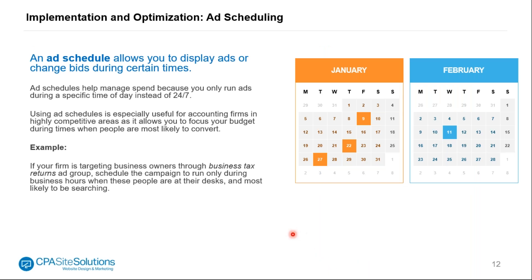Another way to manage your budget is to create an ad schedule, which allows you to display your ads or change bids at certain times. You're basically telling your campaign when the right type of people are searching for your services and displaying it only at that time. Some people run 24/7 especially when starting, but you'll want to watch the metrics and understand when people are clicking, so you can eliminate times with fewer searches and learn when profitable searchers are actually active.